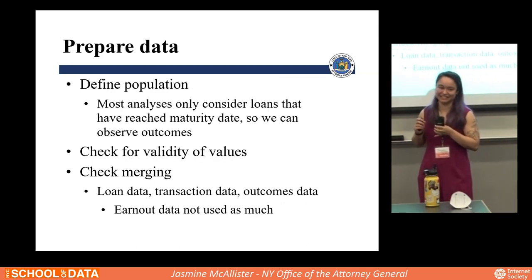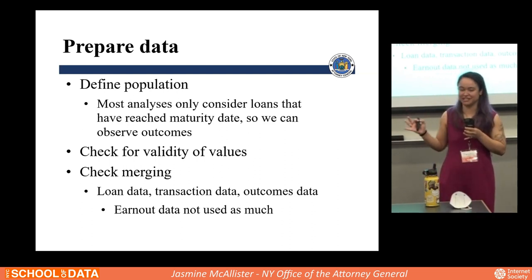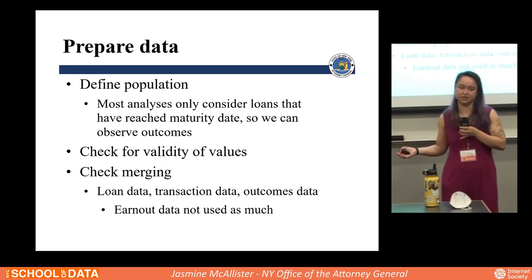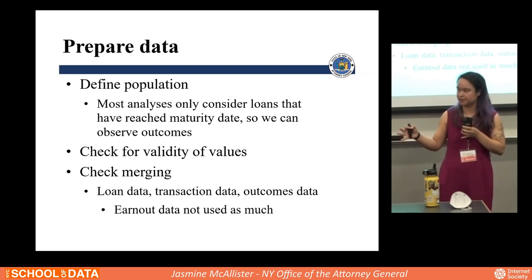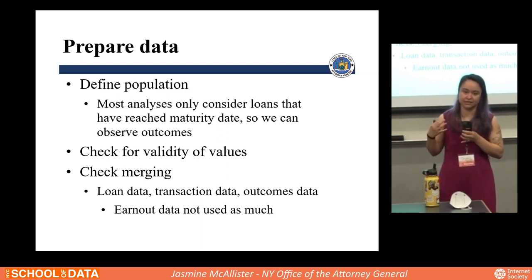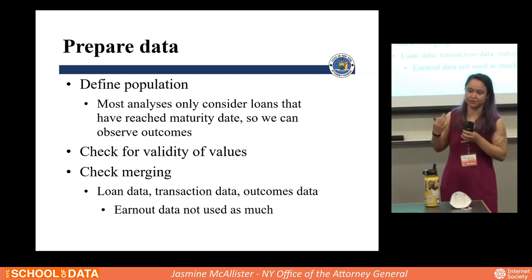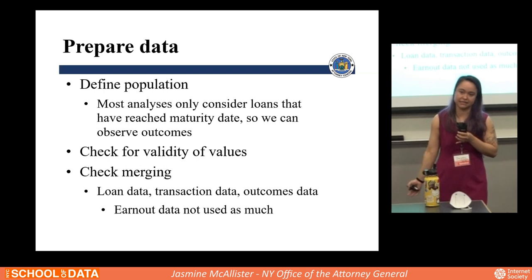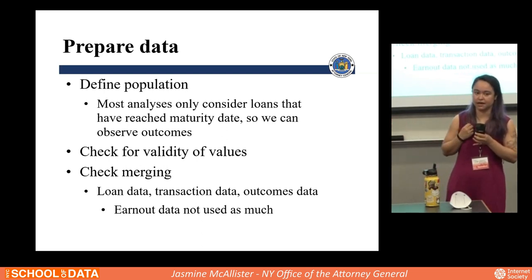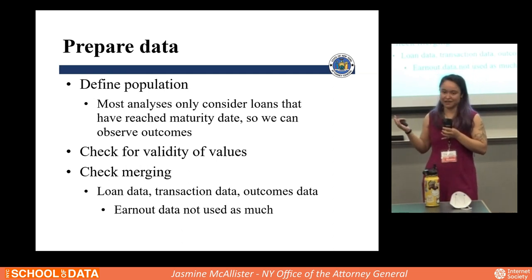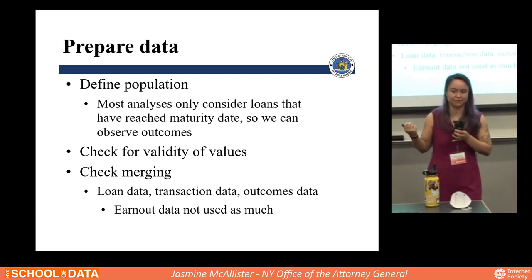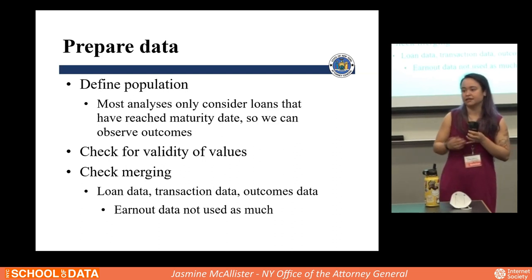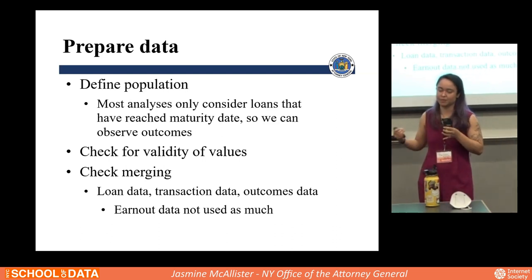On preparing the data: first, we defined the population — we only looked at loans that had reached the end of the loan term by the time they pulled the data, excluding recently issued loans where we couldn't observe the full course of the loan. We checked for validity of values, and then checked merging across the three data sets we had: the loan level, the transaction level, and outcomes — like whether cars were repossessed. We merged all that together and verified everything matched as expected.